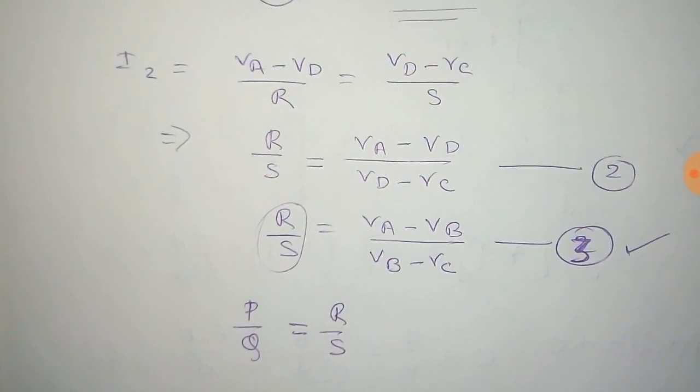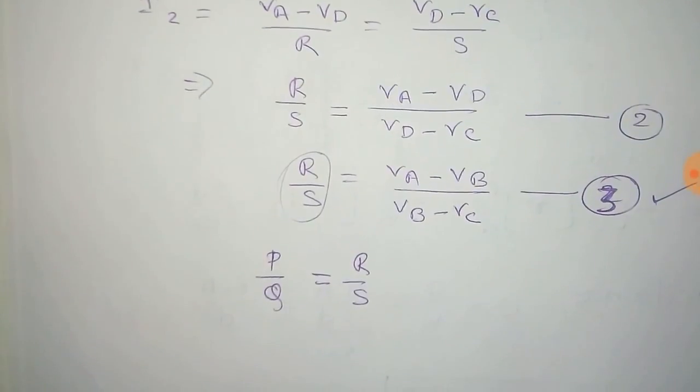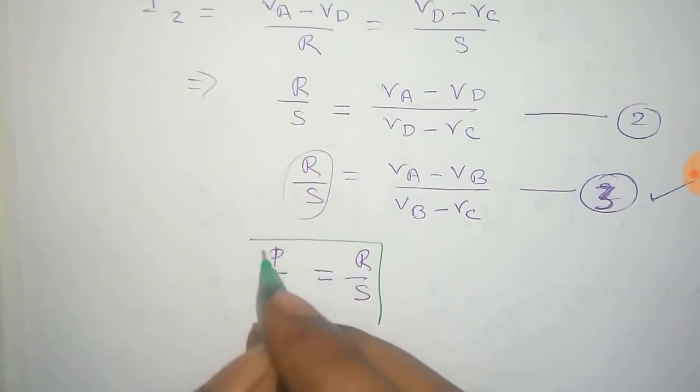And very easily we can get the null condition for Wheatstone bridge network in this process.